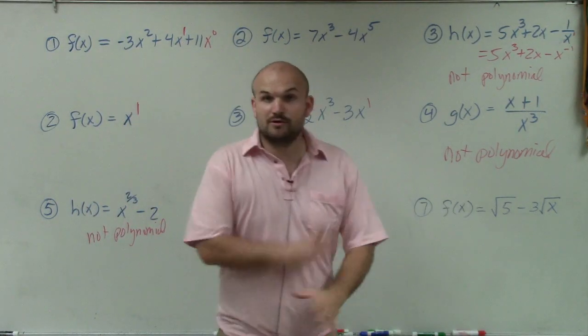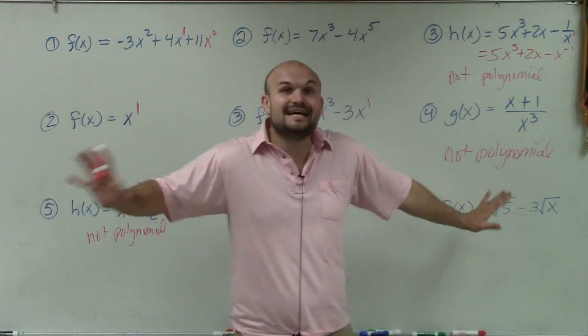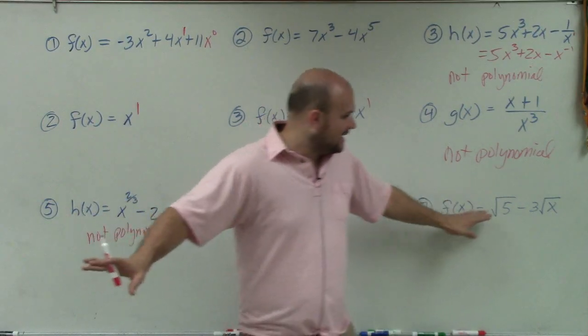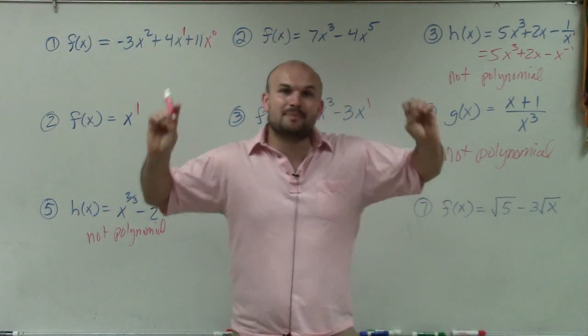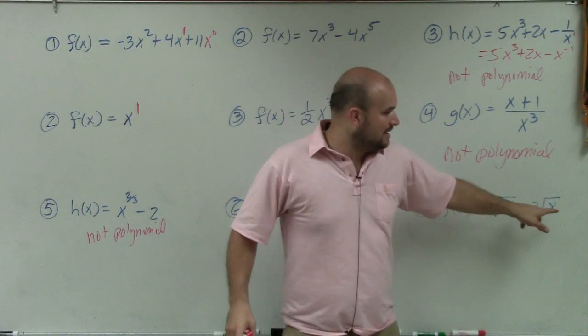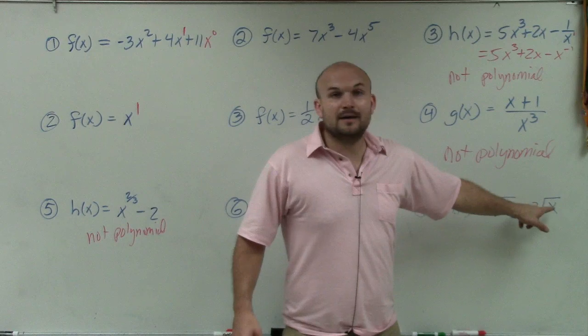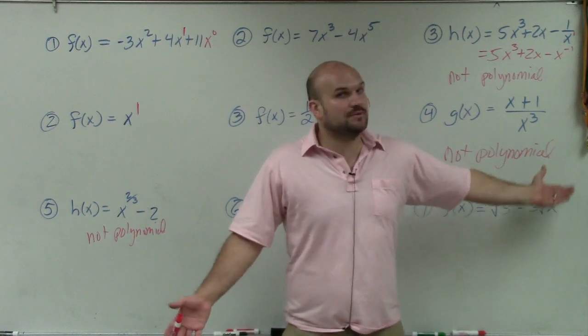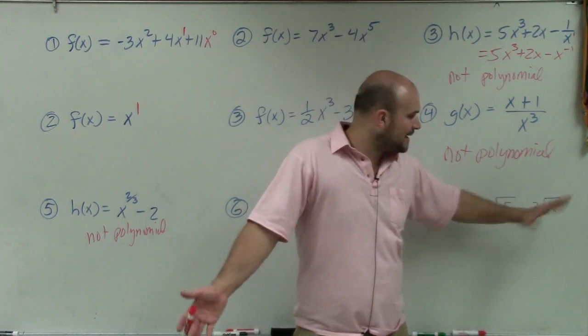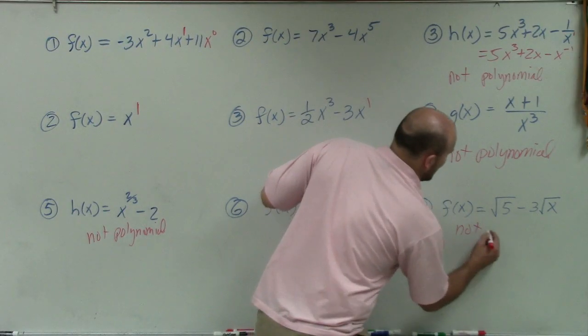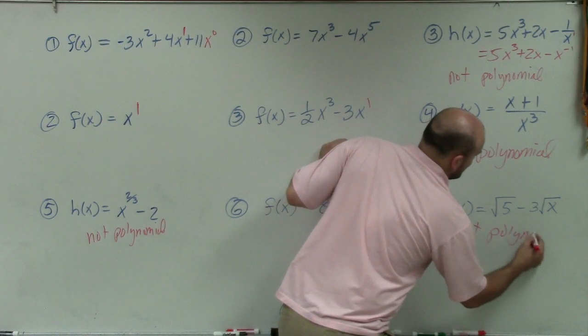Over here, you can see the square root. The square root of 5, that's OK, you can have that as a coefficient. The only thing we're concerned about is the power. We can't have a variable being under the square root or in the denominator. Because this would be rewritten as x to the 1 half if you were to convert that to a rational power, this is another example of not a polynomial.